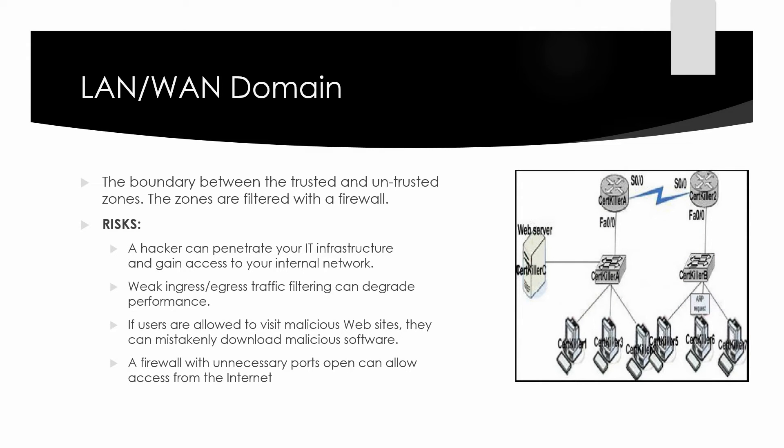The LAN to WAN domain connects the local area networks to the wide area networks. The LAN domain is considered a trusted zone because it is controlled by a company, whereas the WAN domain is considered an untrusted zone because it is not controlled and is accessible by hackers. The area between the trusted and untrusted zones is protected with one or more firewalls. This is also called the boundary or the edge; security here is referred to as boundary protection or edge protection.